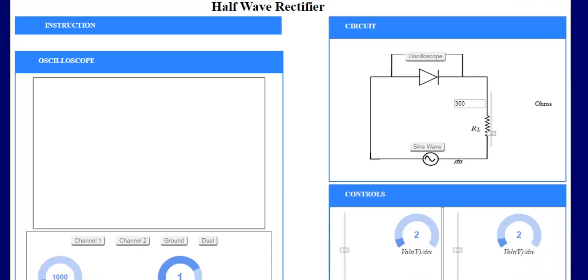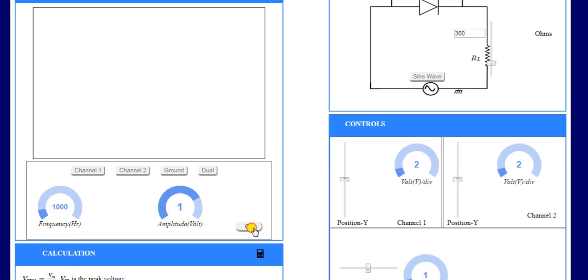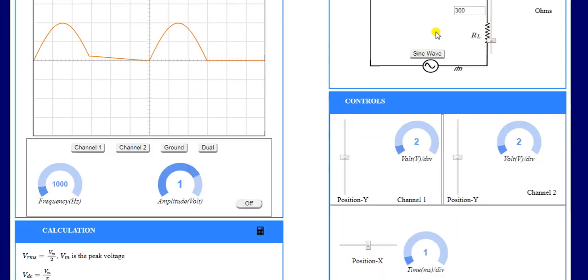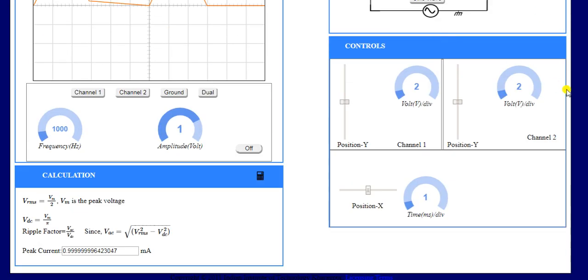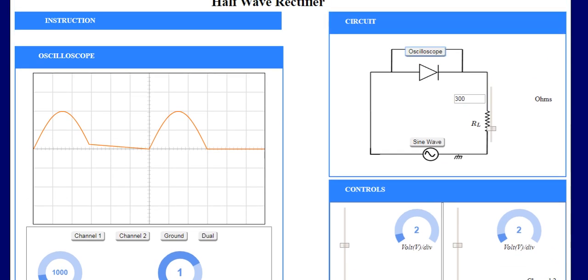Then we have to click on on, then apply sine wave, and then click on oscilloscope. So with the help of this sine wave tab, we are applying our input signal across the diode. And this oscilloscope is basically used for the output.